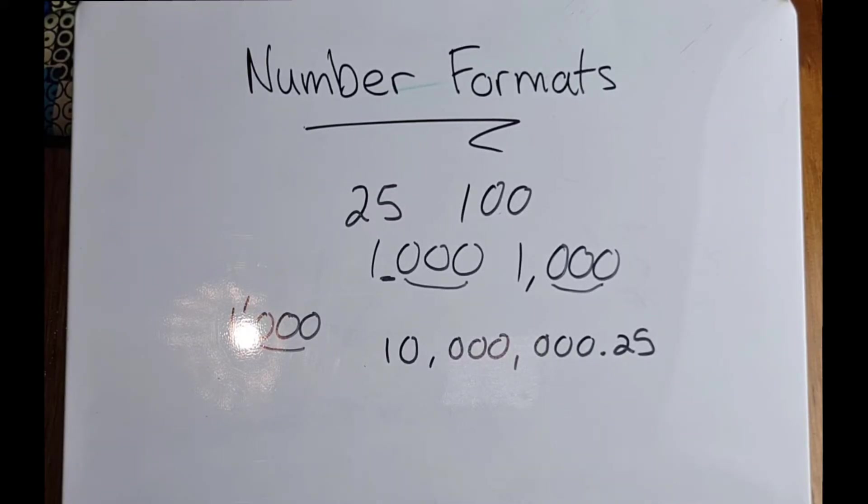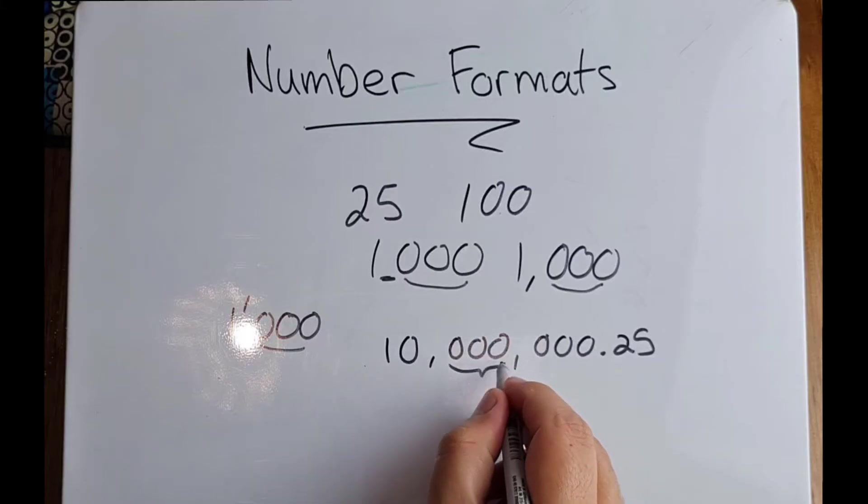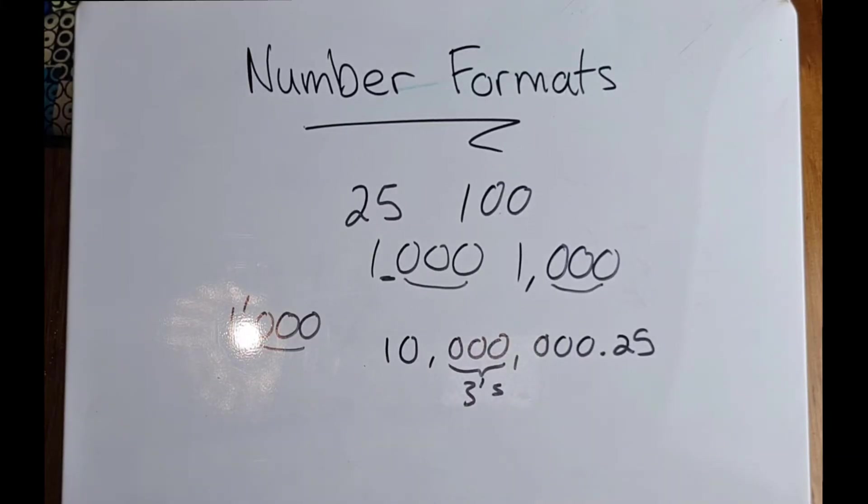Remember our digits are always grouped in threes, and they're grouped in threes from the right. When it comes to these decimals, decimals can sometimes be a comma or full stop.